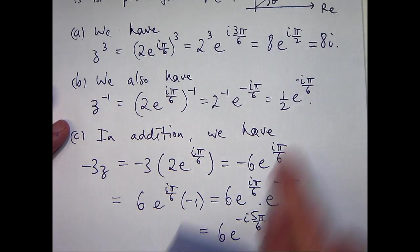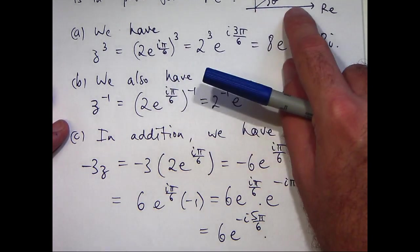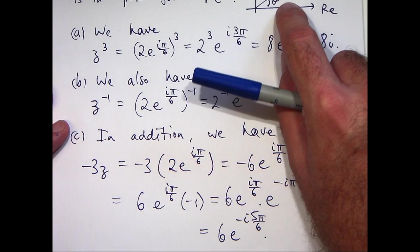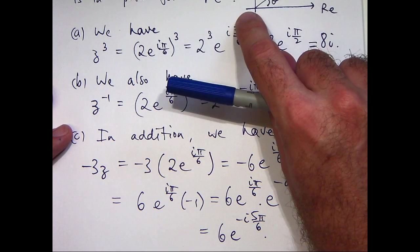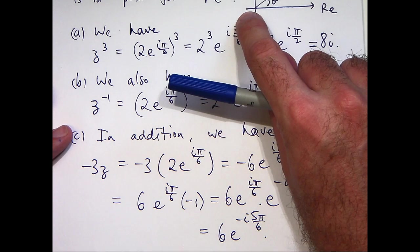So for this complex number, what you would do is you would go out six units and rotate 5π/6 radians in the clockwise direction.